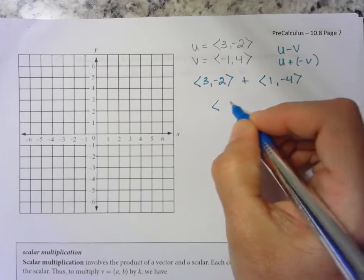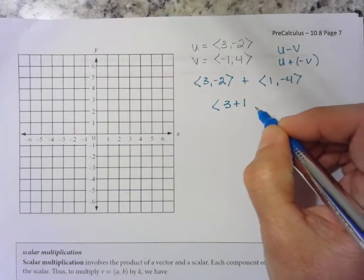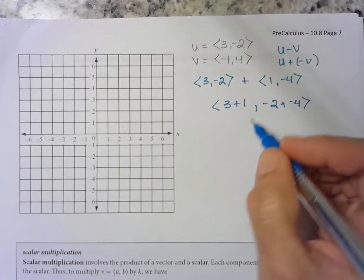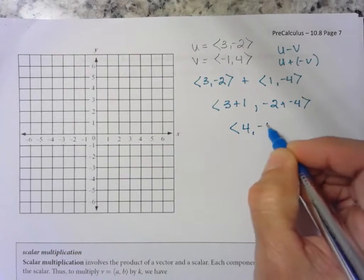It's like distributing the negative throughout the second vector. Add the a's, add the b's. We end up with <4, -6>.